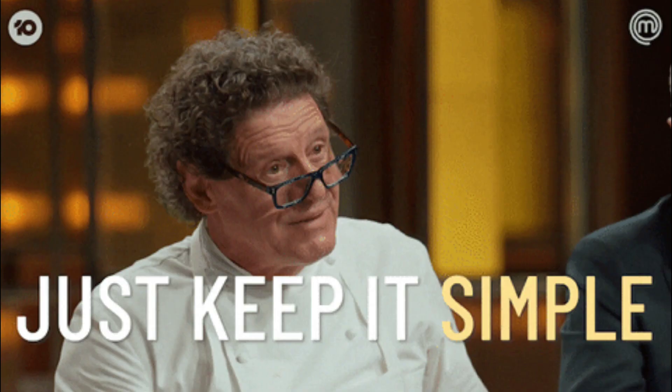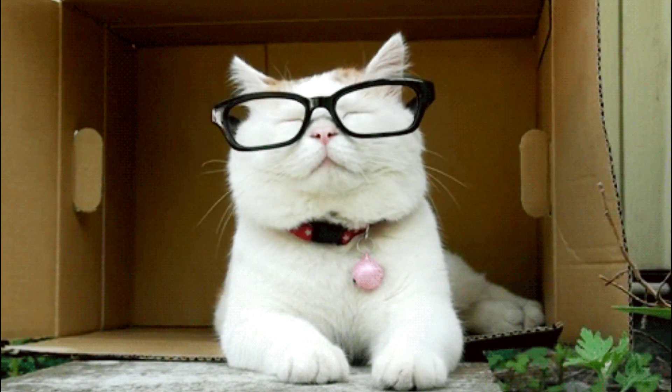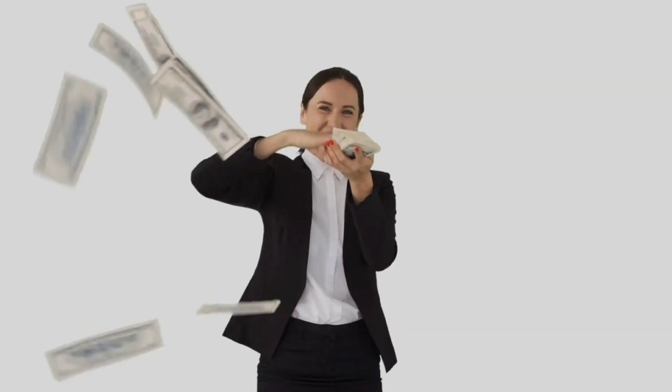Single vision lenses are the most simple type. They correct for one set of vision errors across all parts of the lens. Because they're the most simple design, they're the most cost effective.